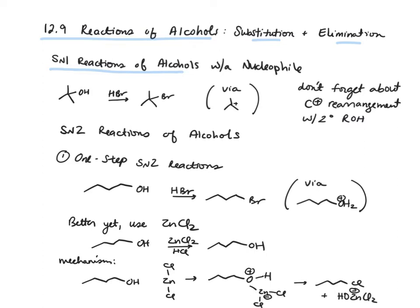For SN2 reactions, we have the one-step reaction with a primary alcohol treated with hydrobromic acid, and these are generally forceful conditions because we need to protonate water and then protonate the alcohol, and then in a second step, have the bromide ion attack the primary carbon, and water leaves as a good leaving group.